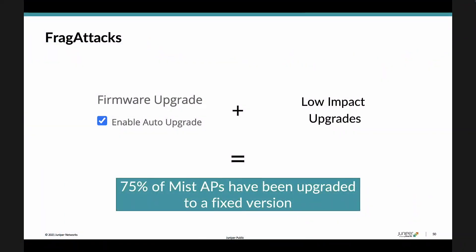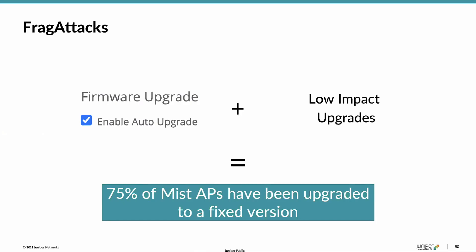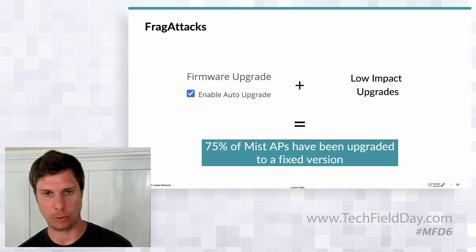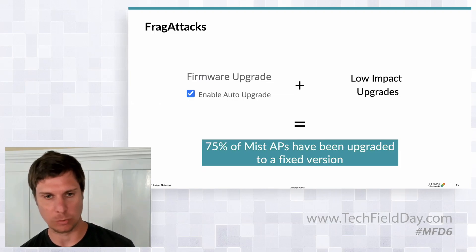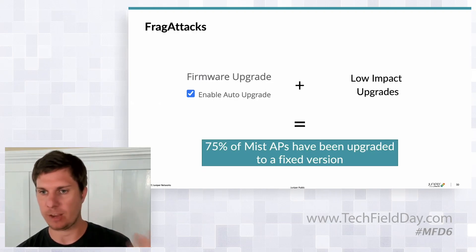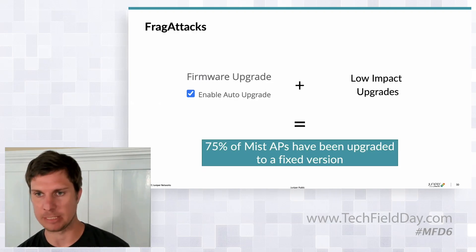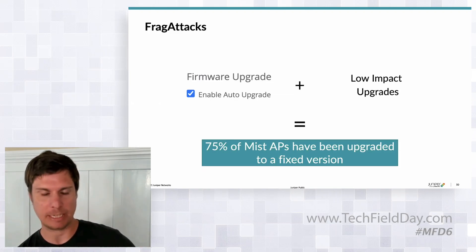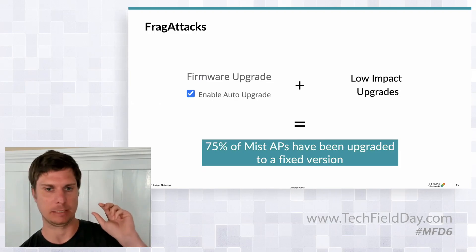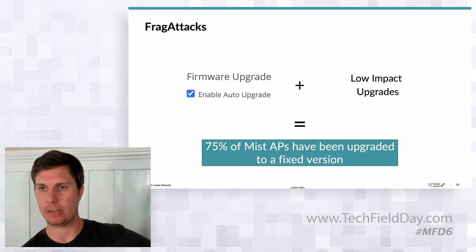Moving on — a brief update on frag attacks. Frag attacks were a list of vulnerabilities announced in May, fairly substantial in scope. The most severe and most applicable vulnerability could be mitigated from the AP side. For our customers, we're now at a point where 75% of MIST APs have been upgraded to a fixed version. This is phenomenal adoption, and it really comes down to ease of upgrade. Many customers have auto-upgrade enabled, so once we set the frag attacks fix version as auto-upgradable, customers received the new version automatically without having to think about it.